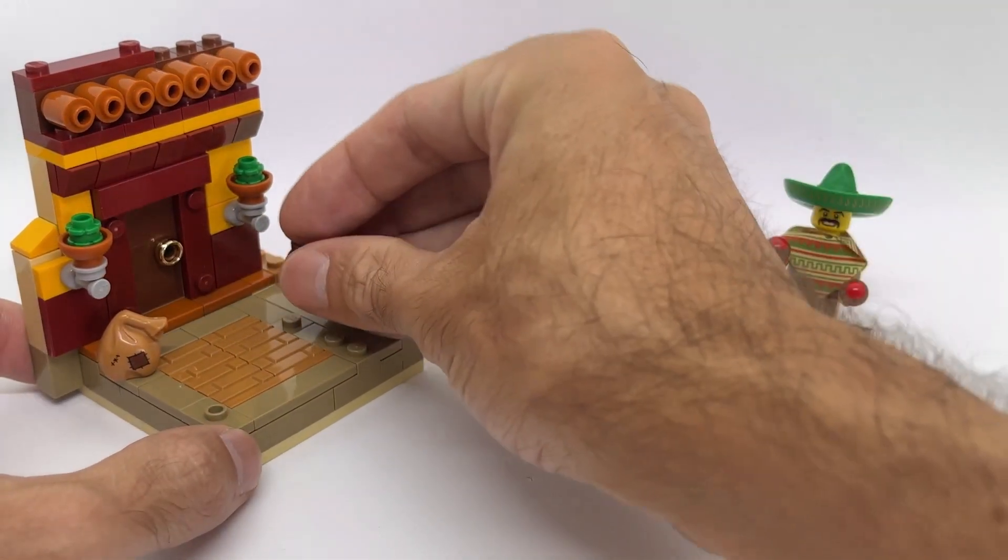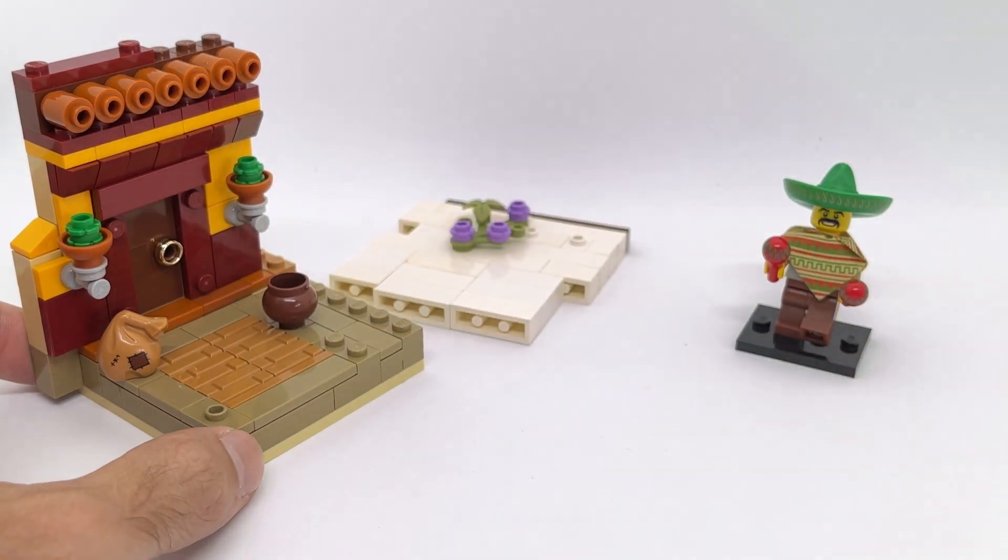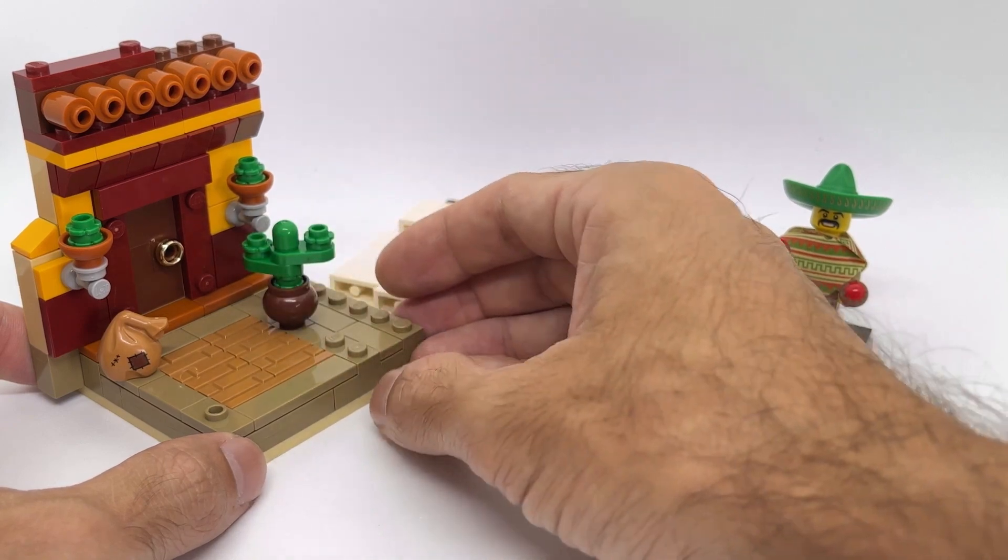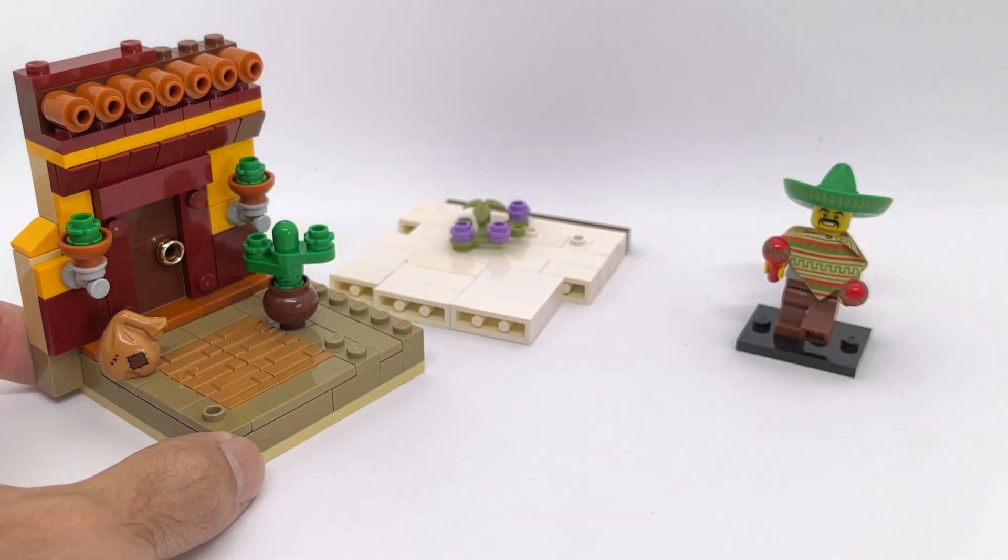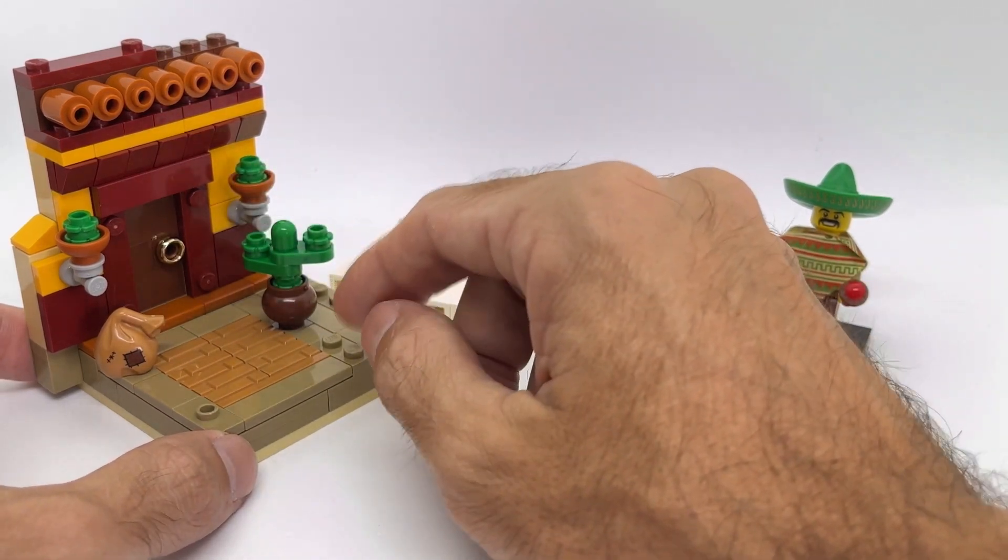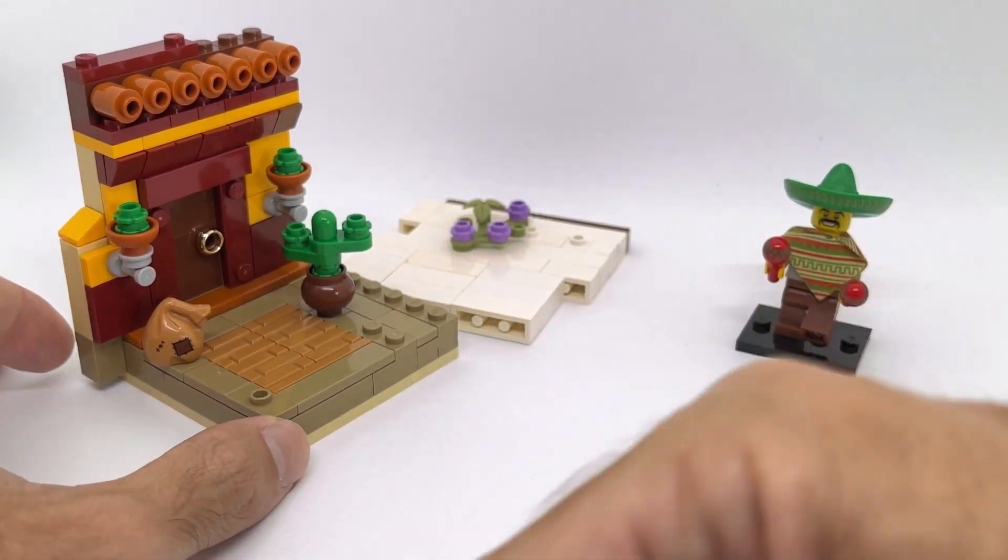So one thing I'm gonna add is this vase over here where we can add another plant which is some sort of cactus kind of thing and over here we're gonna add an additional minifigure. So you can see already we're gonna have two buildings, we're gonna have four plants and I'm planning to have two minifigures.